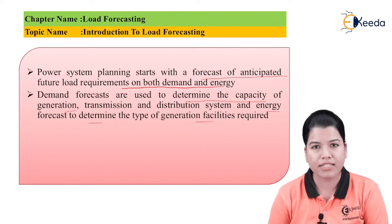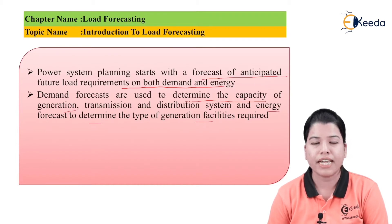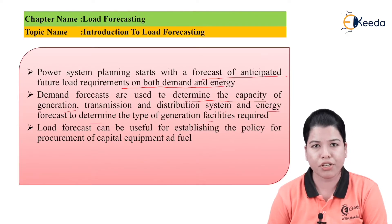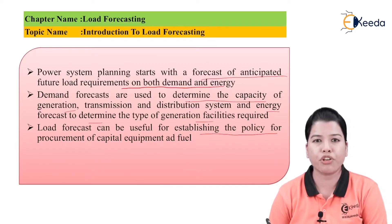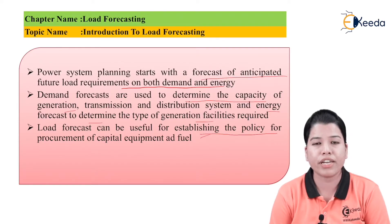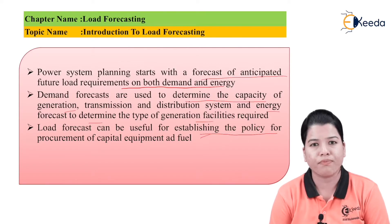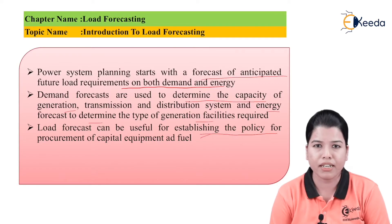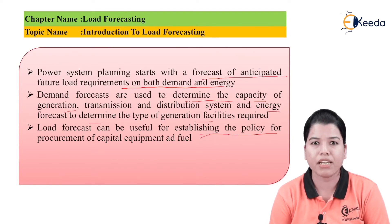Depending upon the forecasting, generation, transmission, and distribution can be estimated for future requirements, and we can also estimate the demand for energy. The load forecast can be useful in establishing the policy of procurement of capital equipment as well as fuel. Since generation of energy is a very costly process, in order to create more generation, capital requirement is also more and certain equipment is also required. So by doing proper forecasting, the demand on the power system can be estimated, and as a result the requirement of capital as well as equipment can be forecasted.